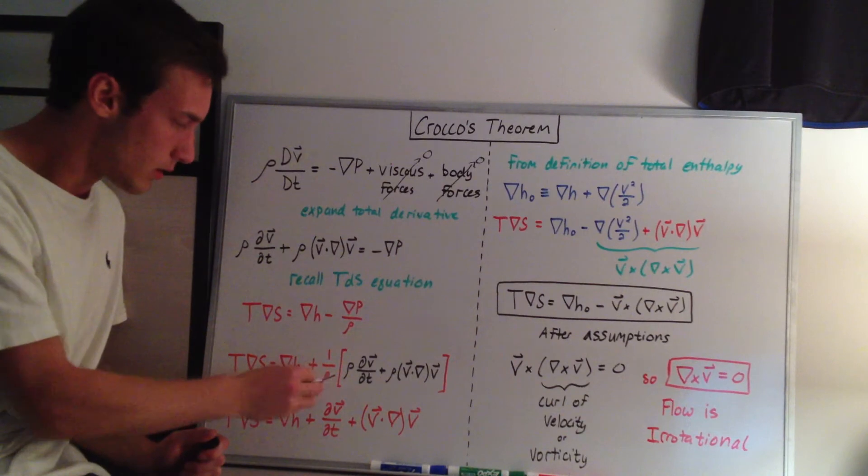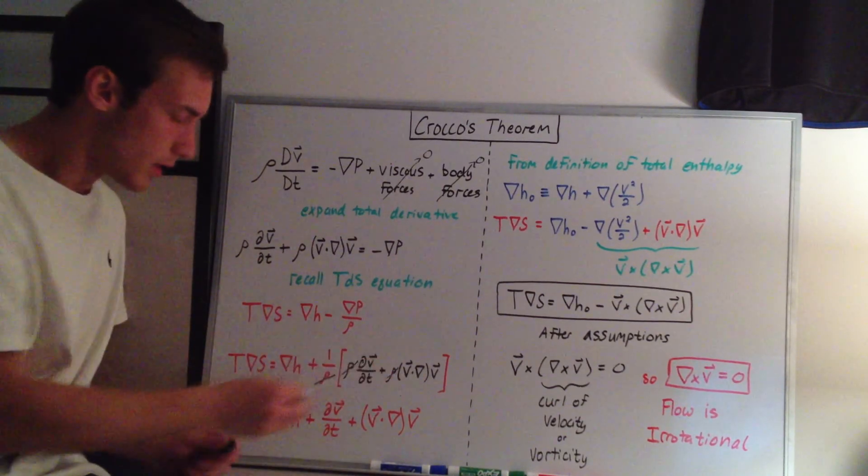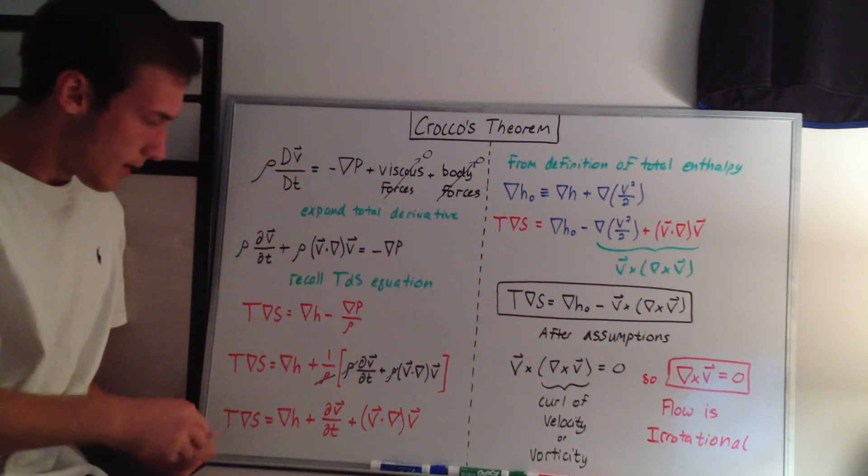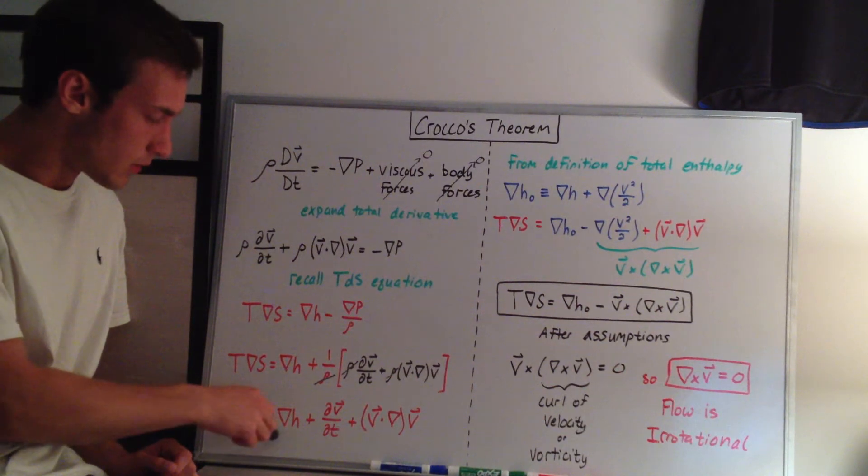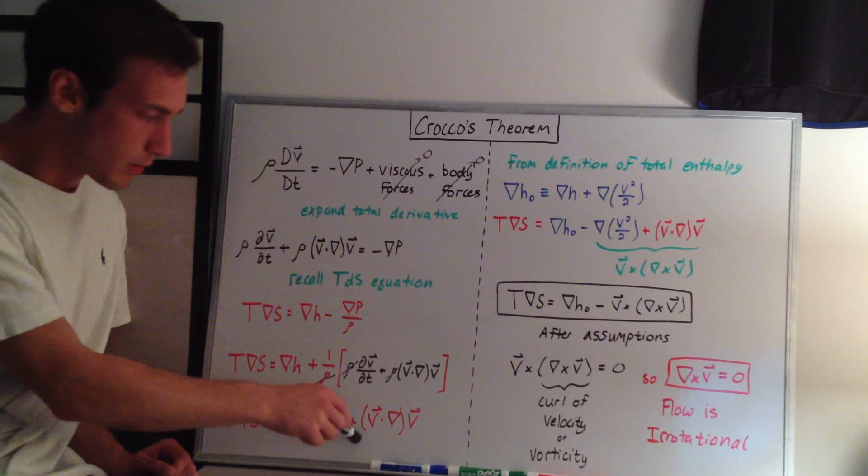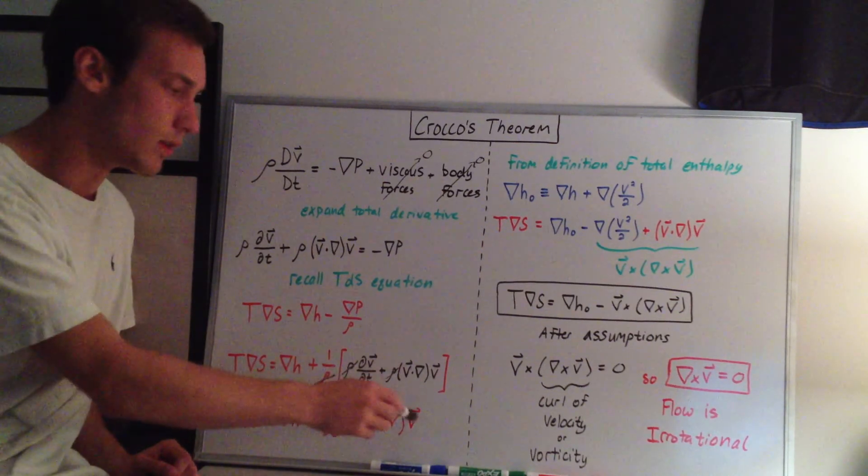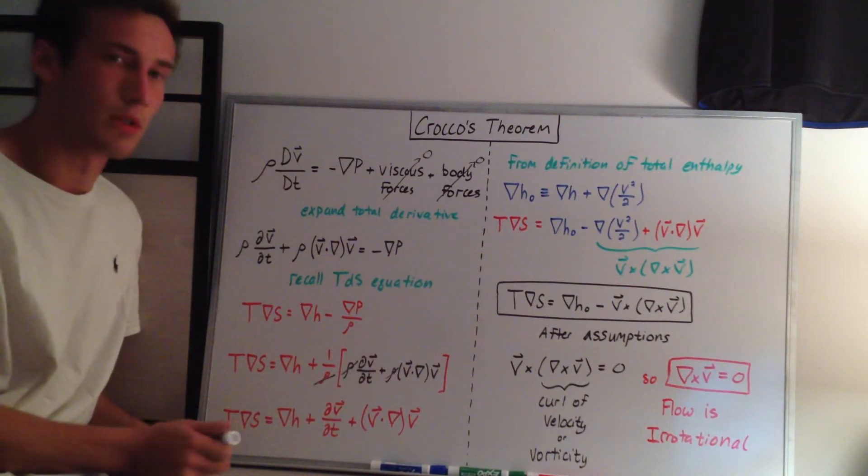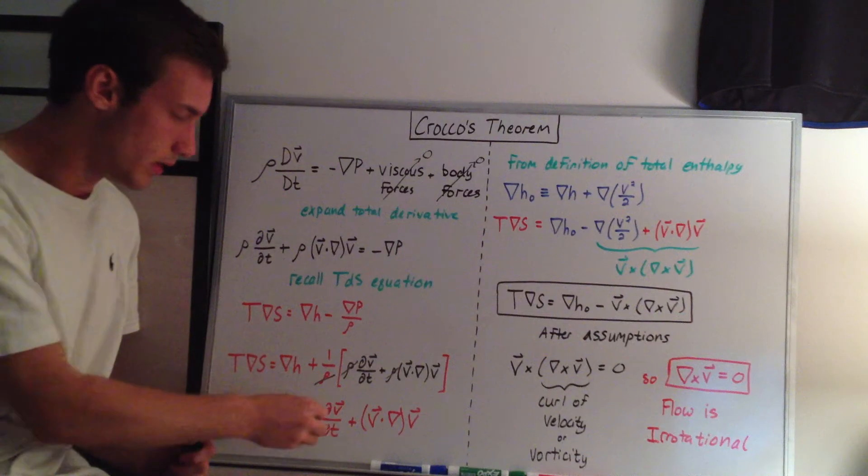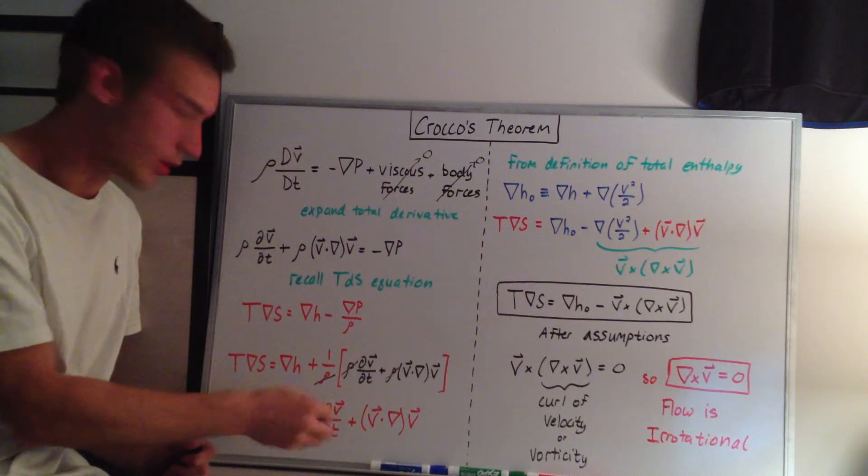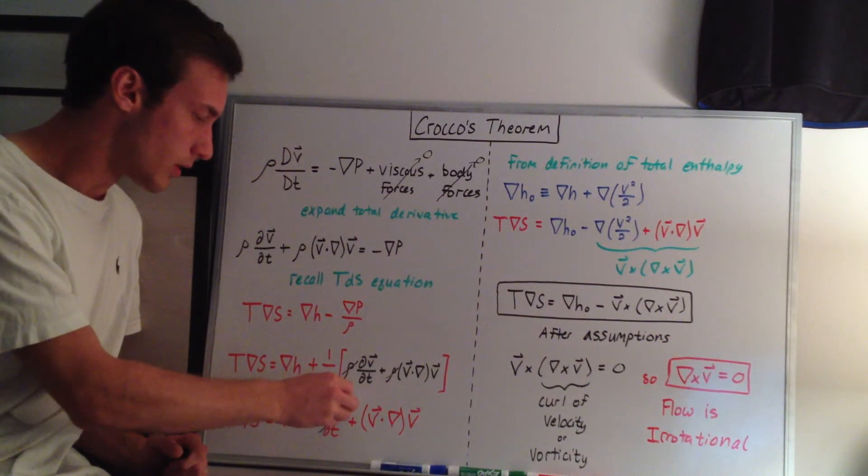Then you can see that the negative becomes a positive because of the negative here. So we still have TdS equal to dh plus one over rho, and this black portion corresponds to this up here. Then the densities cancel here. We're left with TdS equal to dh plus dv/dt plus this v dot del v. Since we're doing steady flow, the time derivatives are zero, so this goes to zero.